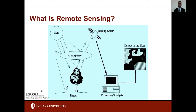The first requirement for remote sensing is to have an energy source which provides electromagnetic energy to the target of interest. As energy travels from its source to the target, it interacts with the atmosphere. Once energy passes through the atmosphere, it interacts with the target depending on the properties of both the target and the radiation. After the energy has been scattered by or emitted from the target, a sensor collects and records the electromagnetic radiation.